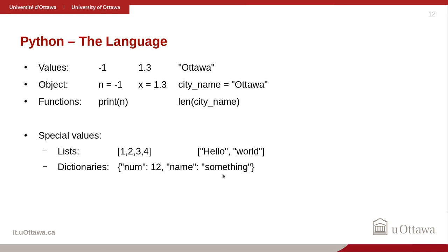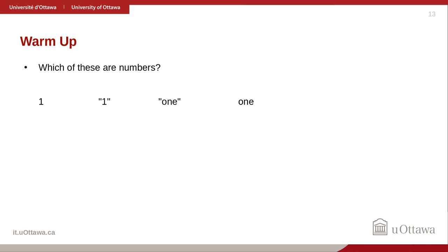Here's a warm-up quiz: which of these entries is a number? Everyone says the one on the left — correct. A value that looks like a number but has quotation marks is actually a string. One with quotation marks is a string. One without quotation marks but no numeric literal is an object — still not a number. So only the raw numeric literal is actually a number.